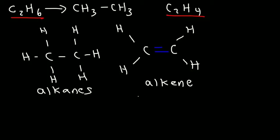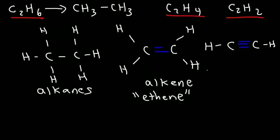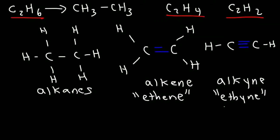A two-carbon alkene is known as ethene. Now what about C2H2? We have a total of two hydrogen atoms, so we put one hydrogen atom on each carbon. In order for the two carbon atoms to have four bonds, we need to put a triple bond in the middle. Whenever you have a hydrocarbon with a triple bond, you have what is known as an alkyne. A two-carbon alkyne is known as ethyne. The common name for that is acetylene, and the common name for ethene is ethylene.